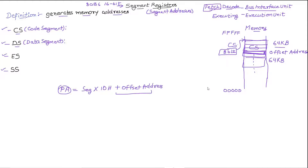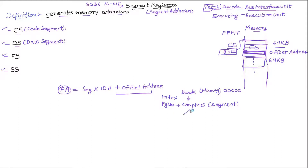You can think of this like a book divided into chapters. Consider the book as memory and the chapters as segments. To access each segment, you specify the page number of each chapter in the index. Each chapter is further divided into topics, and to access any topic you go to the page number of that particular topic — which is essentially the offset address. That's a helpful analogy to remember this concept.